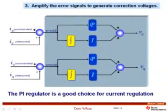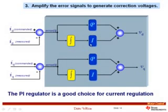Step three: take the error signals from the d and q axes and amplify them using PI regulators. Due to the nature of the poles in the transfer function for most current regulators, additional phase compensation is generally not needed — a PI regulator is sufficient unless sampling frequency is very low or other phase delays exist in the system. This step generates two correction voltages: V_d and V_q. We are then ready for the fourth and final step.